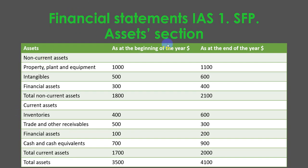Let's look through an example of the assets section of the statement of financial position. As you can see, it contains two columns: figures at the beginning of the year and at the end of the year. There is a non-current assets section containing property, plant and equipment, intangible assets, and financial assets, with a total calculated. The current assets section contains inventories, trade and other receivables, financial assets, and cash and cash equivalents, with totals for current assets and total assets calculated.